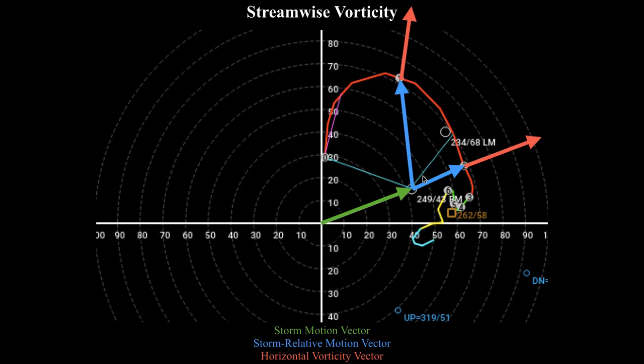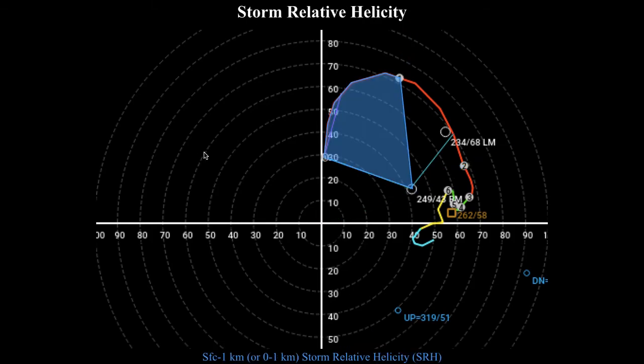Usually the main hazard we diagnose from the hodograph is the potential for tornadoes — how much do the thunderstorms actually want to spin? The way we diagnose that is using this idea of streamwise vorticity. One of the physical parameters used to quantify how much streamwise vorticity is present in the atmosphere is something called storm relative helicity.